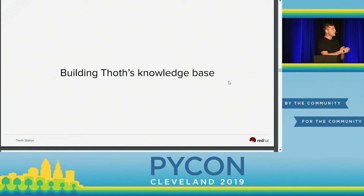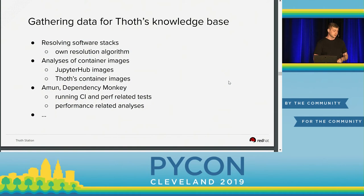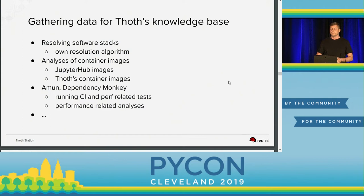Now let's take a look at how we are building Thoth's knowledge base. We have right now at Red Hat two instances of Thoth — one is a test environment, one is a staging environment — and we are provisioning a production environment. In these environments, we are aggregating knowledge: whether the given package or software stack runs, whether there are build failures, whether there are installation failures. We use, for example, Jupyter Hub deployed internally at Red Hat where data scientists use it. We aggregate information each time there is a build of a container image into Thoth's knowledge base. We also analyze Thoth's own container images — so Thoth is analyzed by itself.